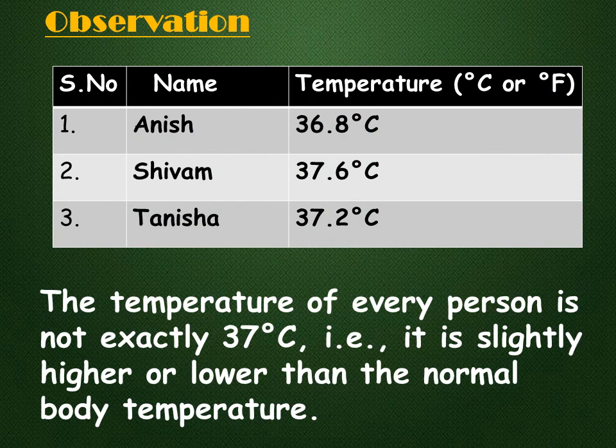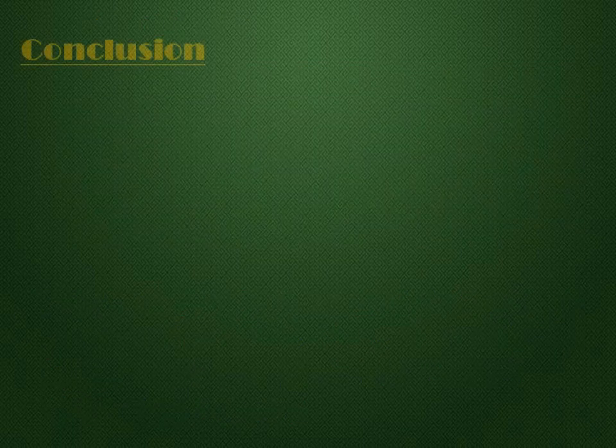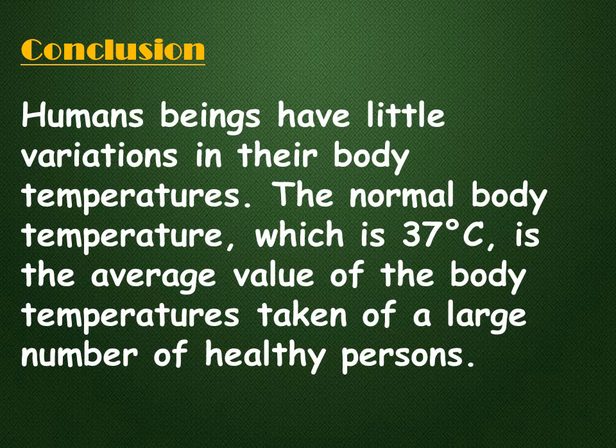What do you observe? You will observe that the temperature of every person is not exactly 37°C; it is slightly higher or lower than the normal body temperature. We can conclude that human beings have little variations in their body temperatures. The normal body temperature of 37°C is the average value of the body temperatures taken of a large number of healthy persons. So if your body temperature is slightly lower or slightly higher than 37°C, you need not worry.